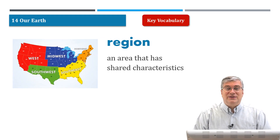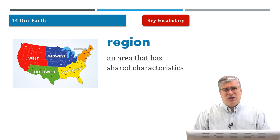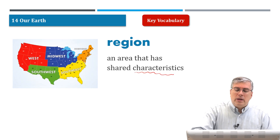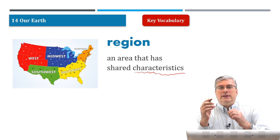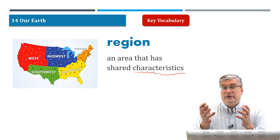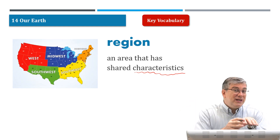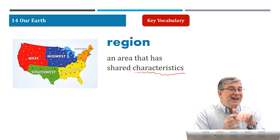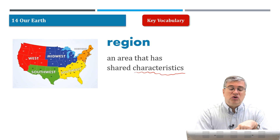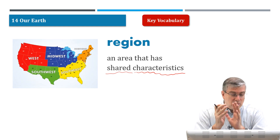We always start with our vocabulary section. The first word is 'region.' A region is the same as an area — it's an area that has shared characteristics. Characteristics are qualities or things you can say about something. Adjectives are usually used to describe characteristics. For example, if someone is tall, that is a characteristic. Shared characteristics means that those qualities are true for the whole area.